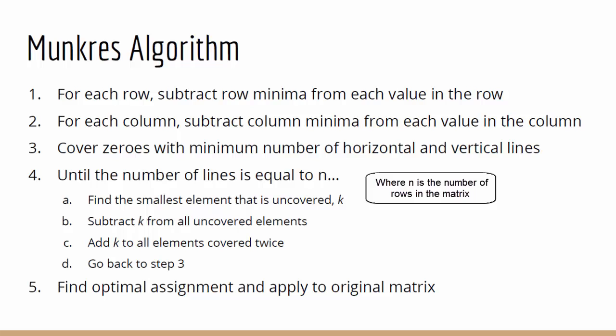Otherwise, we continue with step 4, where we have to find the smallest element that is uncovered, let's say it's k, and subtract k from all other uncovered elements. We then also have to add k to all elements covered by both a horizontal and vertical line, so covered twice.